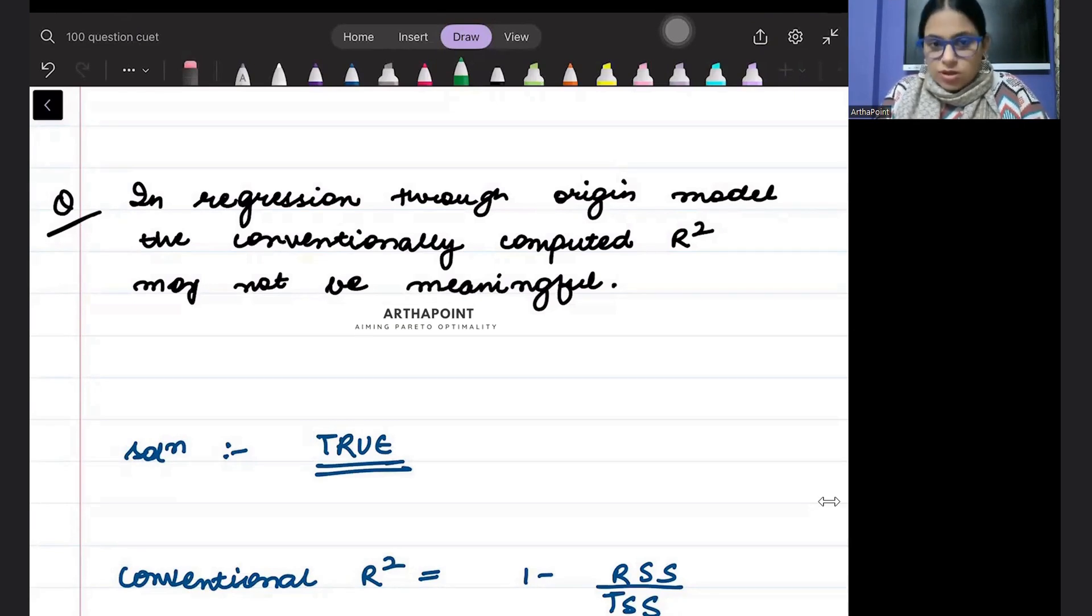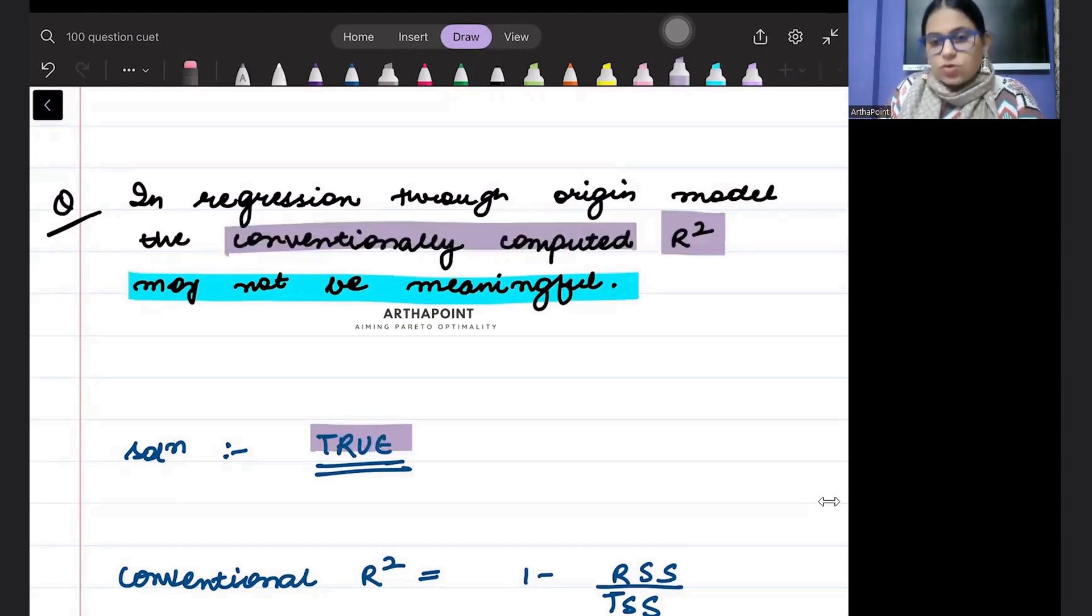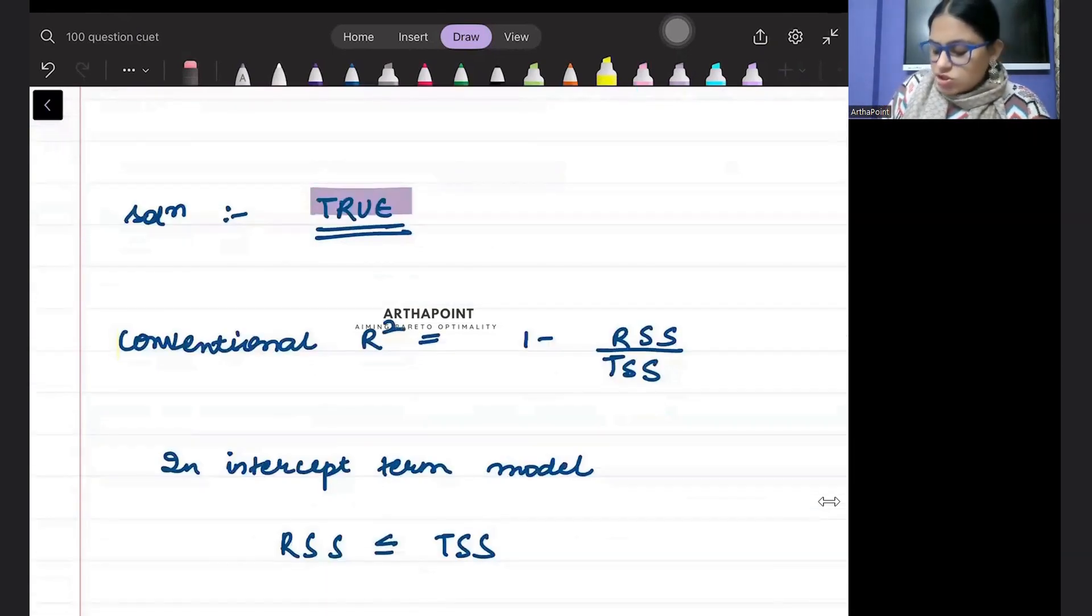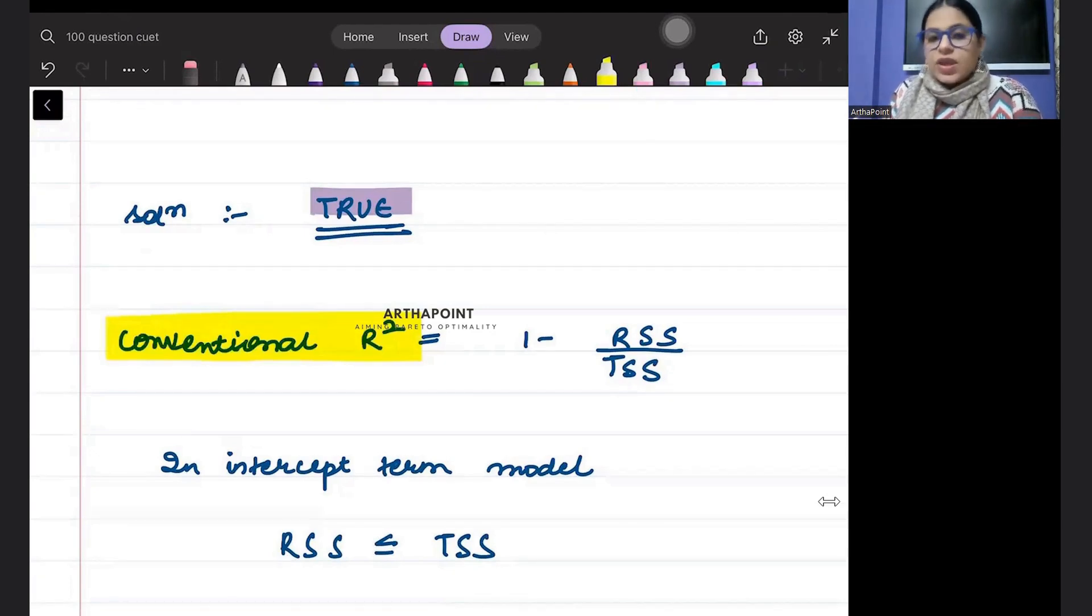In regression through origin model, the conventionally computed R-square may not be meaningful. This is a true statement. What is conventionally computed R-square? Conventionally computed R-square means regression with intercept term, formula used to calculate that is 1 minus RSS upon TSS.